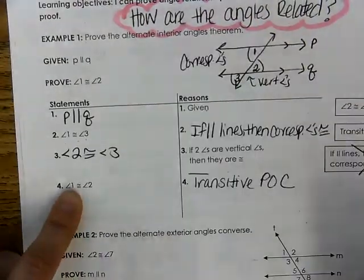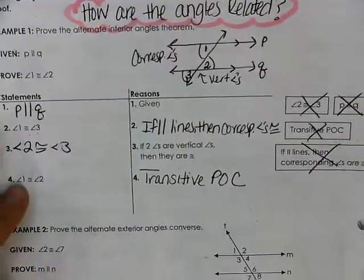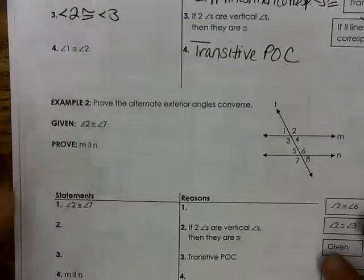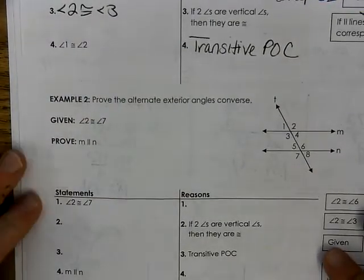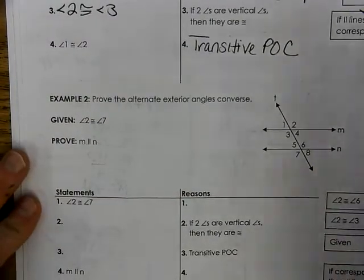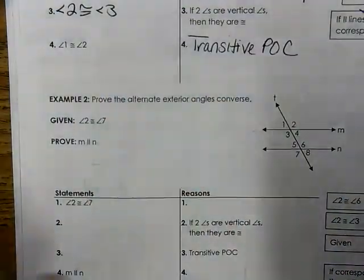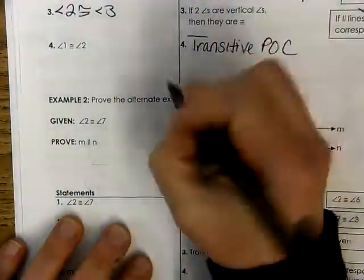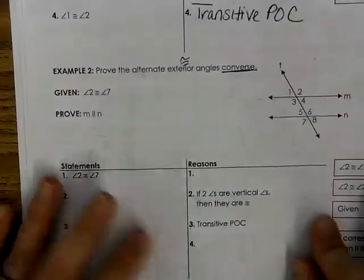Remember that it's the property of congruence if we're dealing with a congruent symbol — a lot of times students get confused about that. Let's go on to the next example. This one we want to prove the converse of the alternate exterior angles theorem, which states that if alternate exterior angles are congruent, then you have parallel lines.